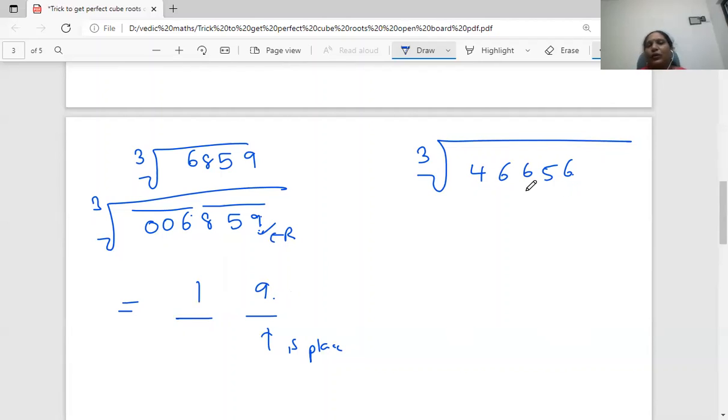So similarly, let's see how to find out the cube root of 46656. So for 46656, starting from the right side, 3 digits, I will make a group. So 46, only 2 digits I have. I will write 0 and I will make another group. So the cube root of this number, it got 2 combinations, so definitely, the answer should have only 2 digits.